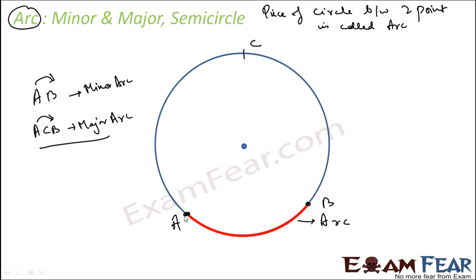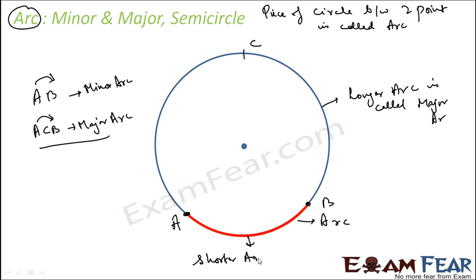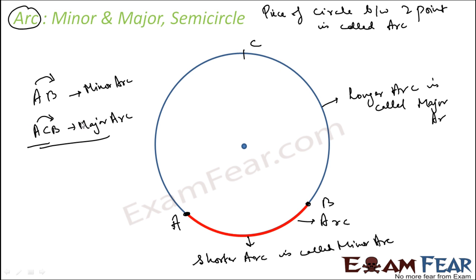The longer arc is called the major arc and the shorter arc is called the minor arc. Whenever you see AB with the arc sign, by default it is the minor arc. So any two points on a circle divide it into two parts: one major arc and one minor arc. To denote the major arc we use a third point C and write arc ACB.